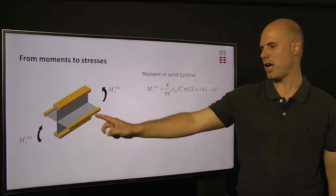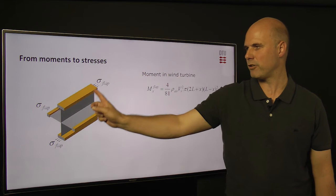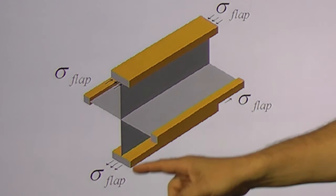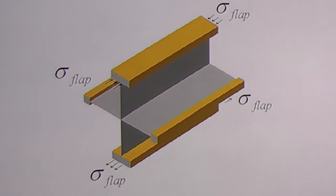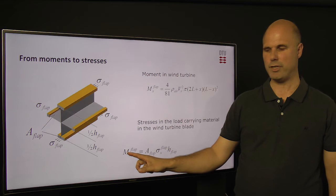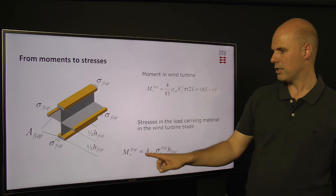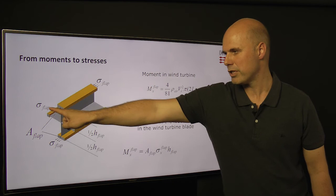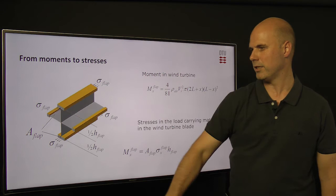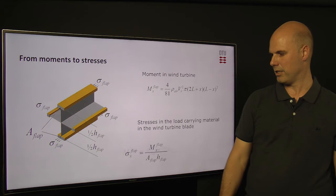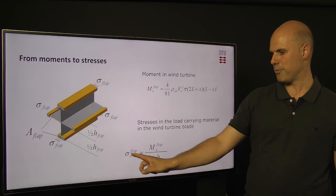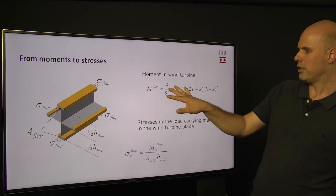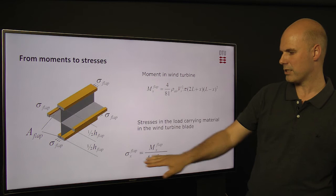Now we would like to go from the moment to the stresses in the material. We have the equation for the moment at an arbitrary point in our cross-section. This moment can be recalculated as stresses in the wind turbine blade material, with compressive stresses in the top and tensile stresses in the bottom. The stresses work as forces given by the stress multiplied by the cross-sectional area, and then act moment-wise given by the arm from the centerline to that point. This gives us the stresses at an arbitrary point along the length of the blade. We can now substitute in the equation for the flapwise moment to get the stresses at any arbitrary point.